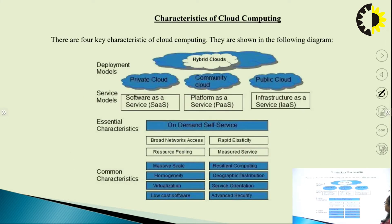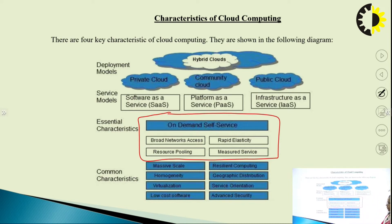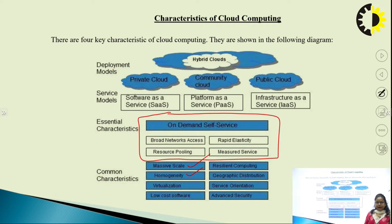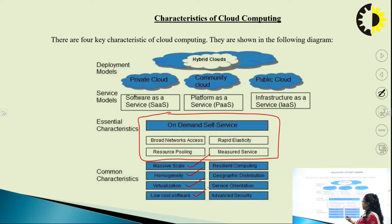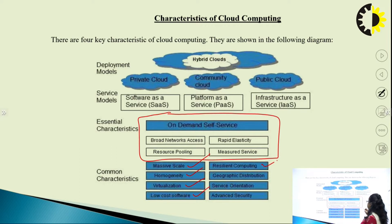There are four to five major characteristics of cloud computing. There are also various common characteristics, like massive scaling through which we can scale up and down. We have homogeneity, in which we can mix files of the same data type. Third is virtualization — whatever data is being worked on goes through a VMM layer. Then we can work on low-cost software; clients are not required to upload or install software locally, they can access the data online. Then there is resilient computing, which provides resilience power to the system.